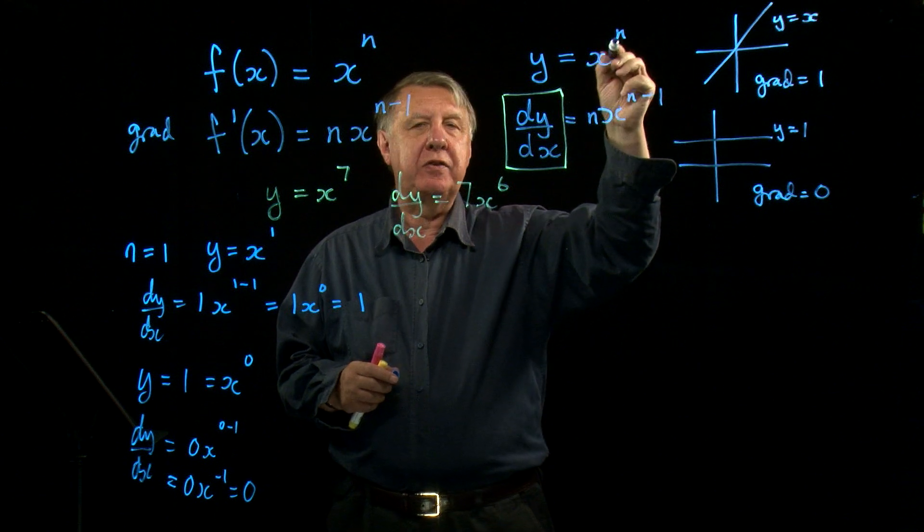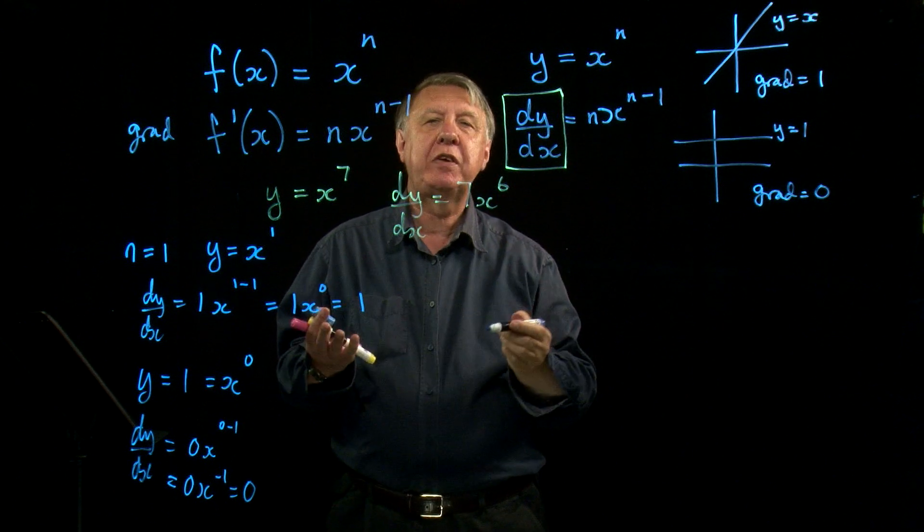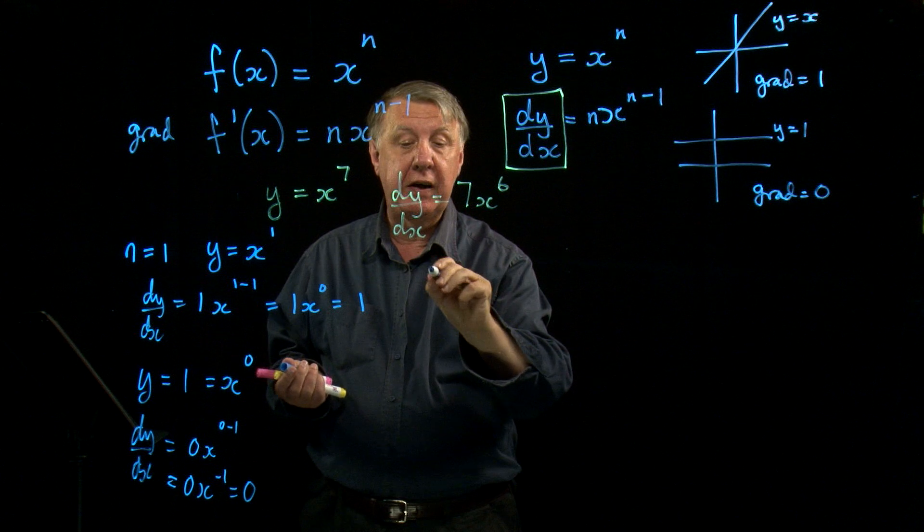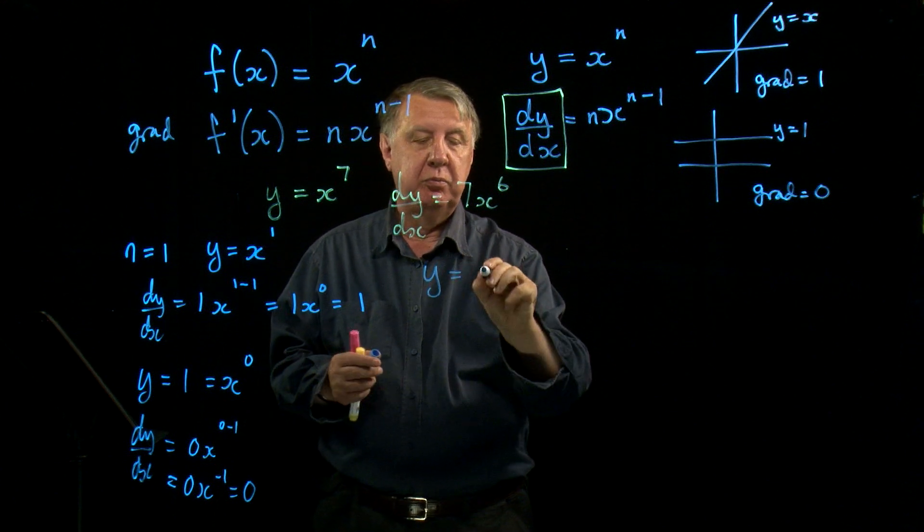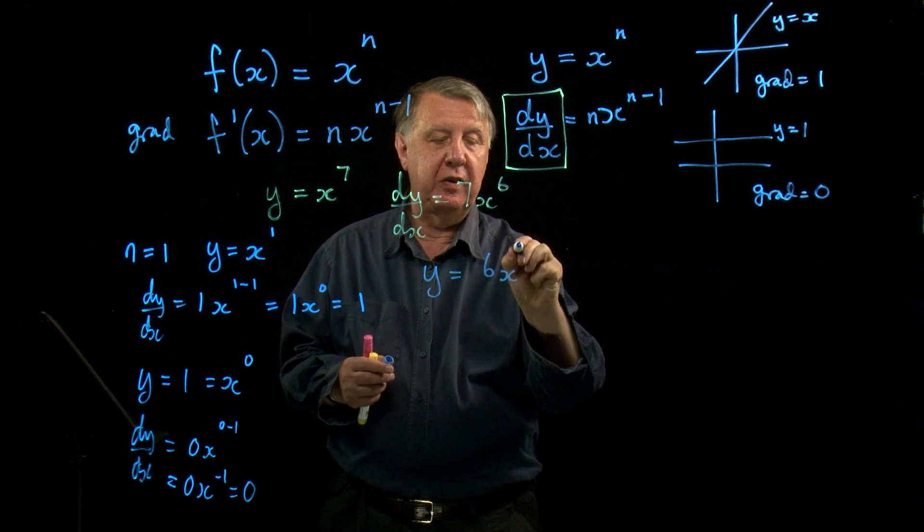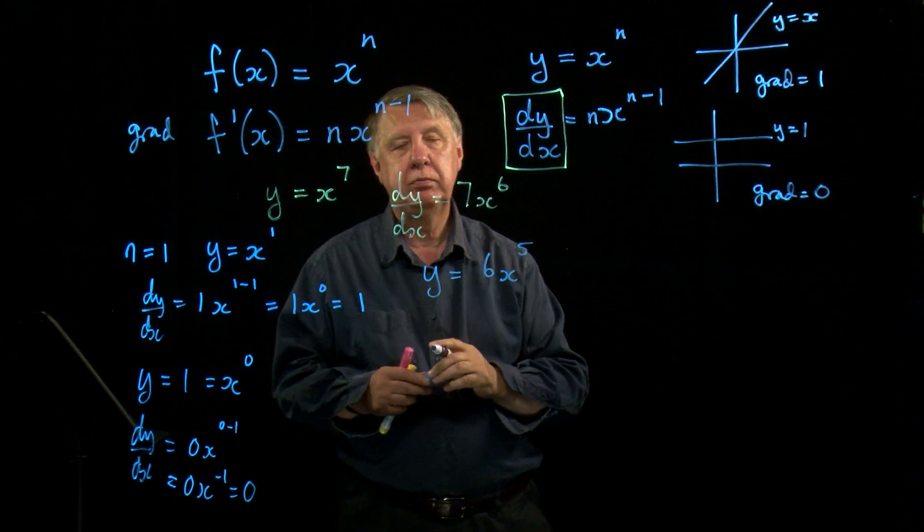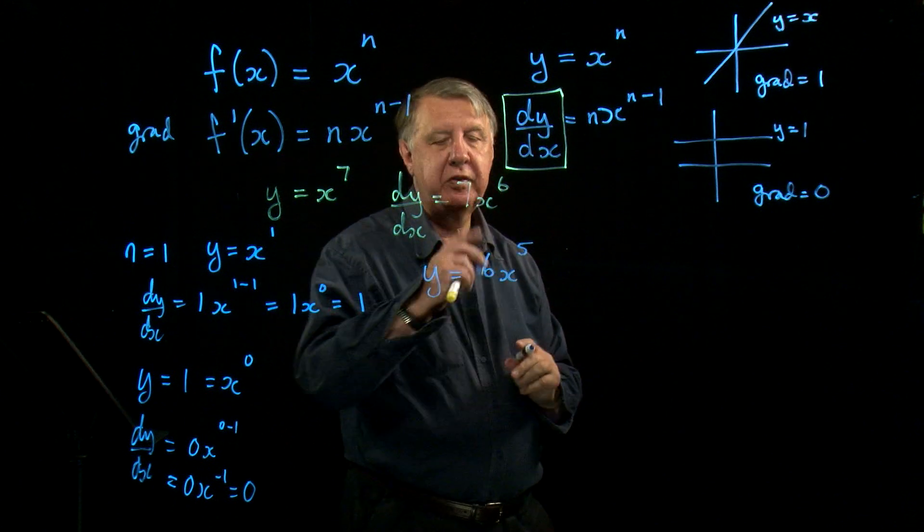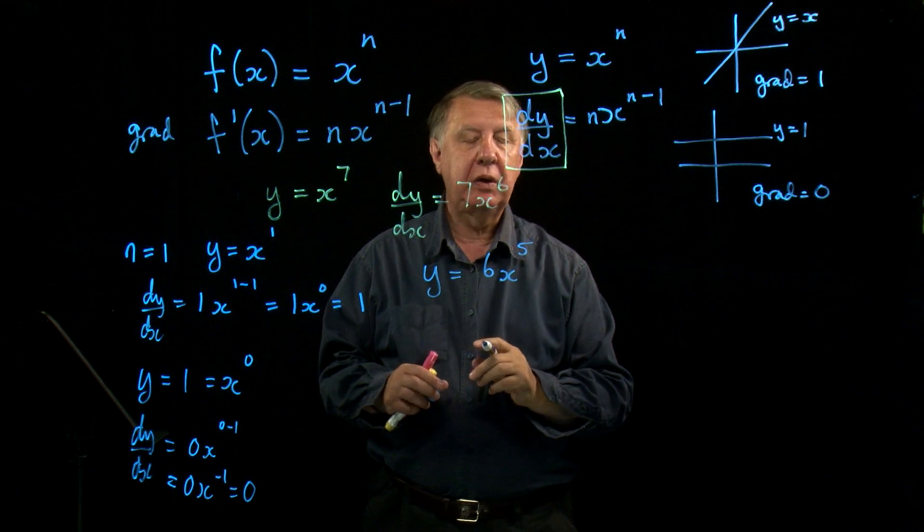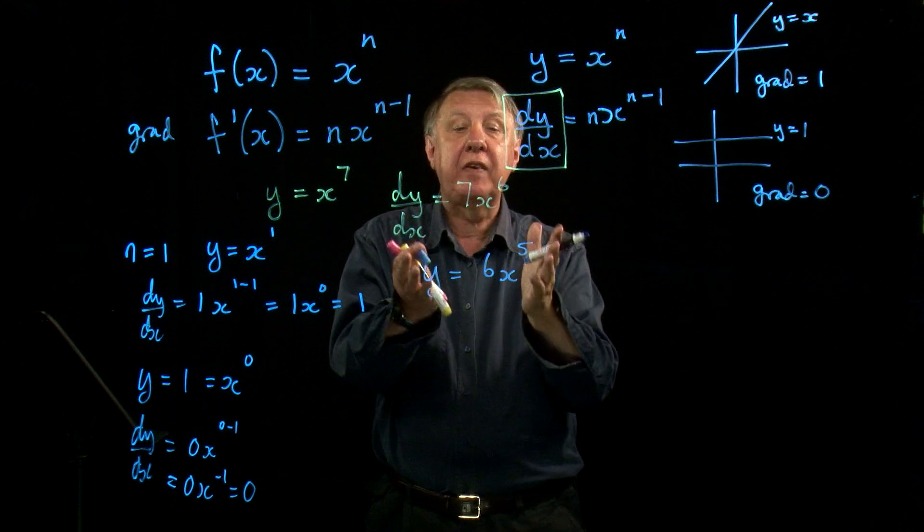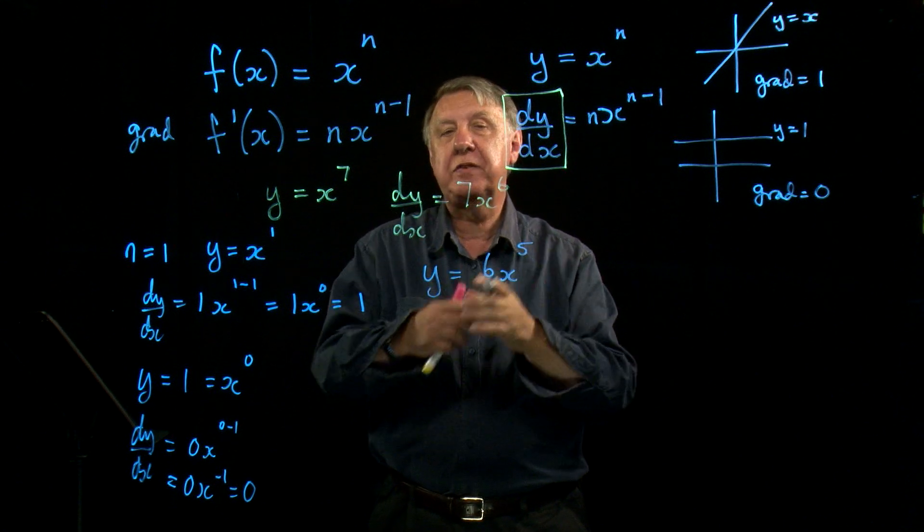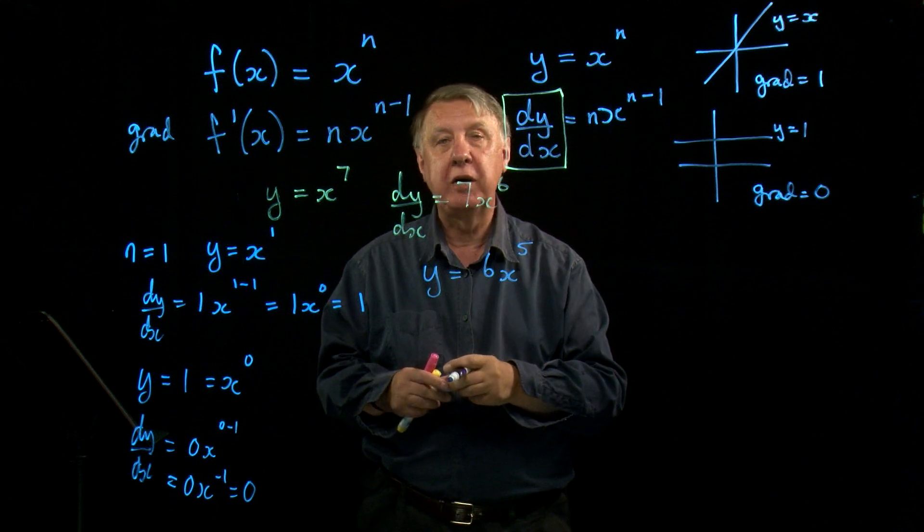So where shall I go from x to the n? Well, I'll often have a number in front of x to the n, so I might have y equals 6x to the 5. What is the significance of that 6? Well, it's very easy. It stays there and multiplies the gradient function by 6.